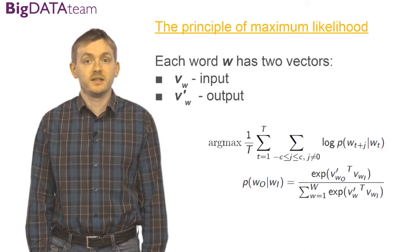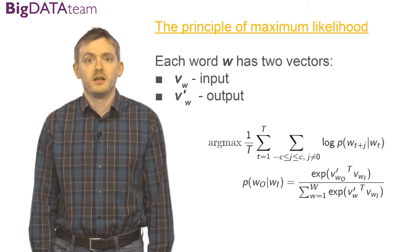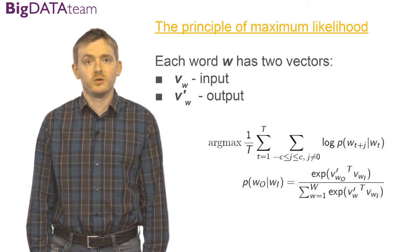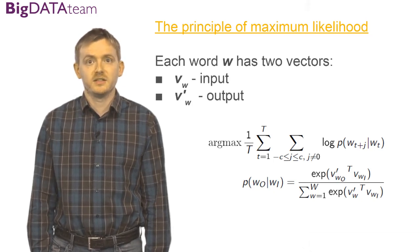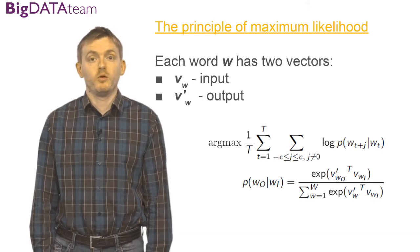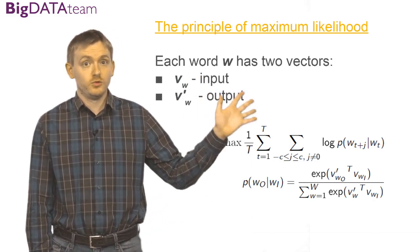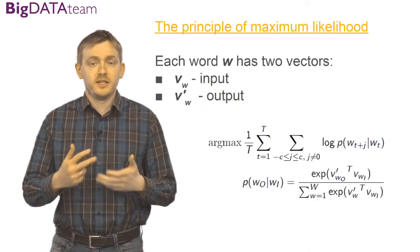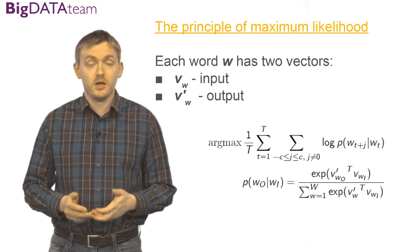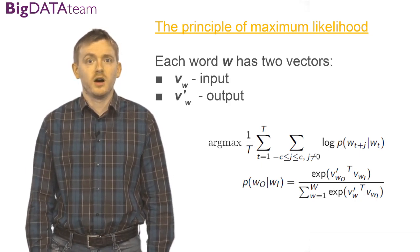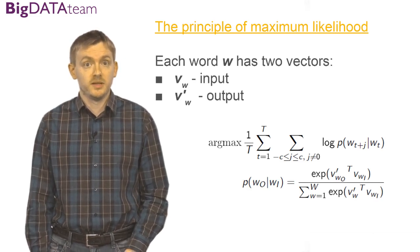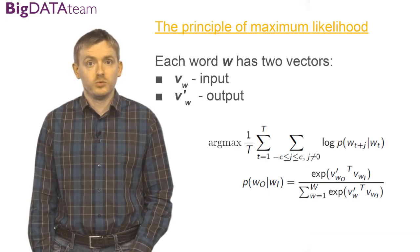Here are some technical details of the Word2Vec model. The model assumes that each word is associated with two vectors. The first vector is called the input vector, and the second is called the output vector. Word2Vec fits these vectors by the principle of maximum likelihood. Here is the function you are maximizing, and I am skipping some technical details. The main idea is that you are fitting these two sets of vectors which are associated with words using the large text corpus. So you are going to find such vectors where the probability of observing the given text corpus is maximal.